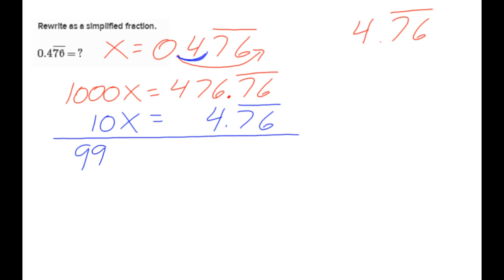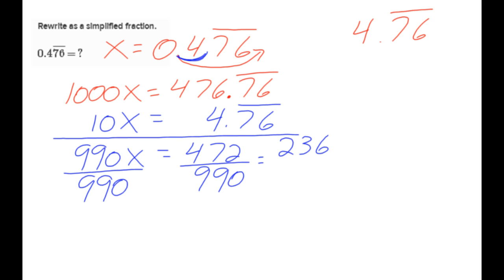I get 990x equals 472, divide both sides by 990. I know at least a 2 goes into both, and that will be 236 over 495, and I believe that is it.